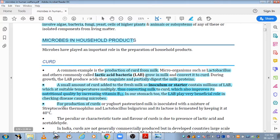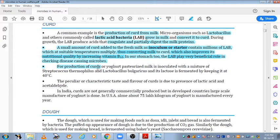For the production of curd or yogurt, pasteurized milk is inoculated with a mixture of Streptococcus thermophilus. For curd or yogurt formation, the process is the same, the microbes used are a little different. Yogurt is sweetened and fruits are added, and the taste is a little different. Pasteurized milk is inoculated with starter, and then its lactose is fermented by keeping it at 40 degrees Celsius.